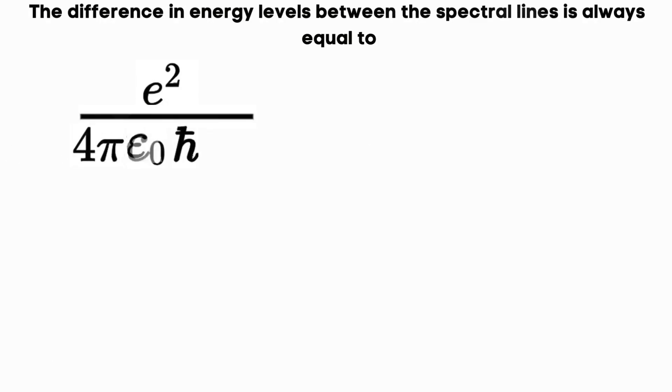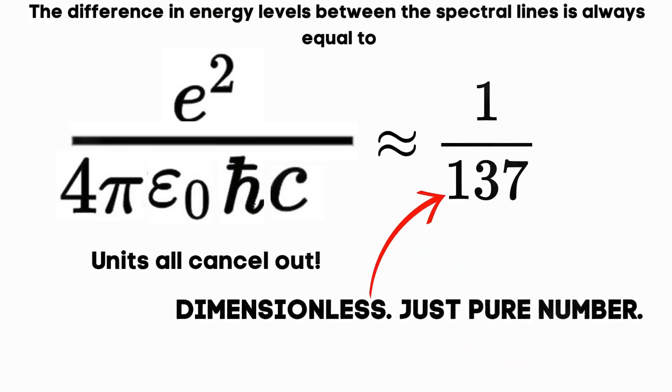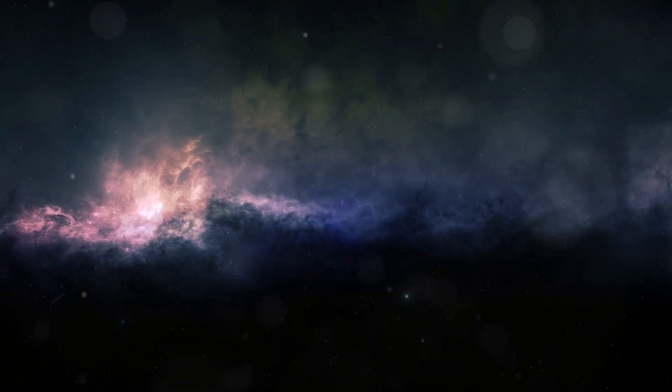This combination, devoid of any units, was purely numerical, leading to the fine structure constant approximately 1 over 137.